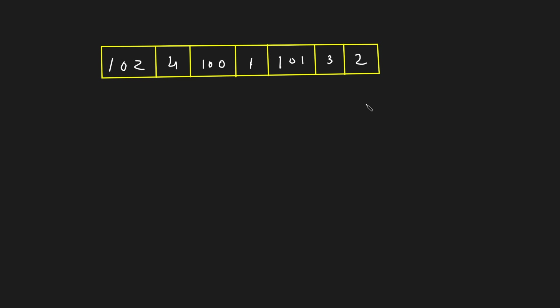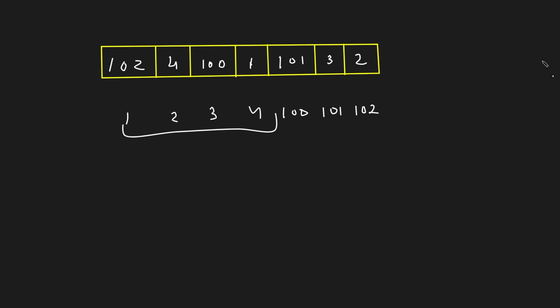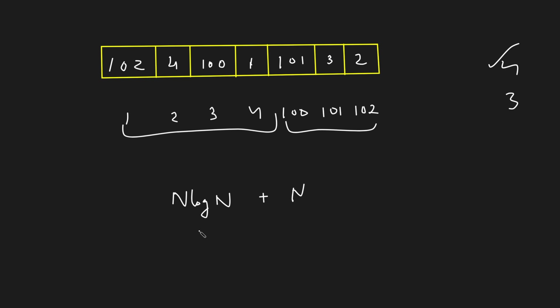As I always say, if you are in an interview the first solution you should give to the interviewer should be the naive one. The naive solution is to sort this array. Once you have sorted it, you can simply linearly iterate and see that there is one consecutive sequence of length 4 and one more of length 3. Out of all consecutive sequences you take the longest one, so the answer is 4. The time complexity is O(n log n) for sorting, plus O(n) for the iteration, and O(n) extra space if you use merge sort.